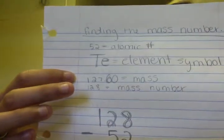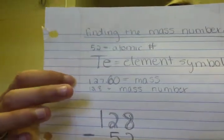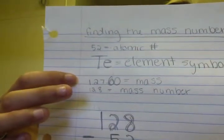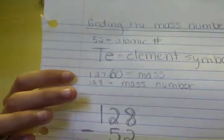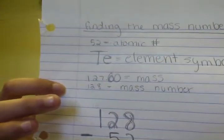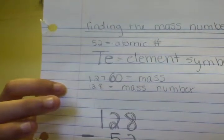To find the mass number, you must round the mass weight, which is 127.60 rounded, equals the mass number, which is 128.